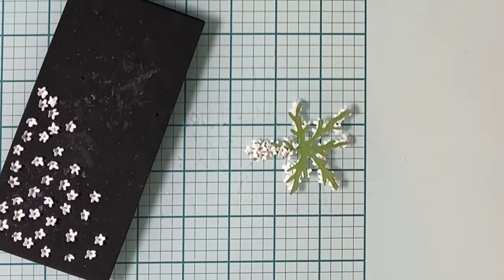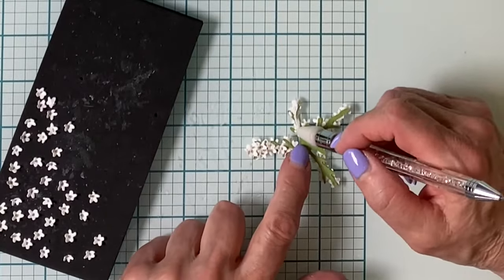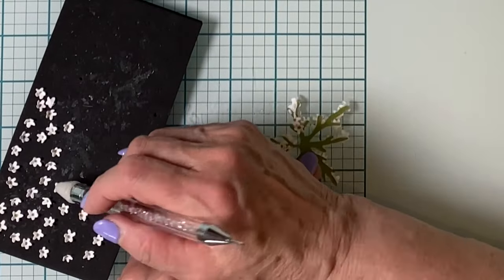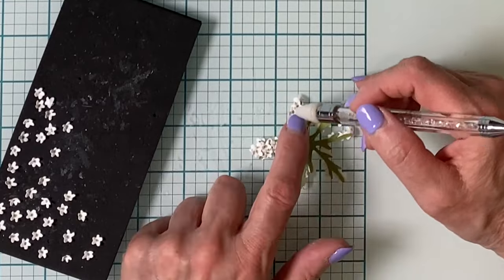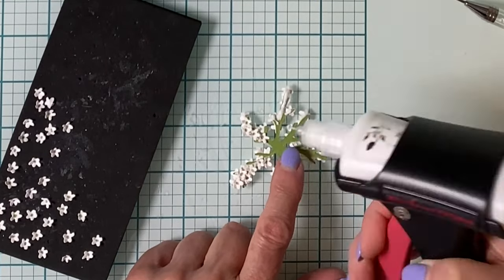The second largest base will be the foundation for the flower and needs to be flat on one side so that it can be adhered to the card front. Before I do this, I let the other grouping of flowers completely dry.